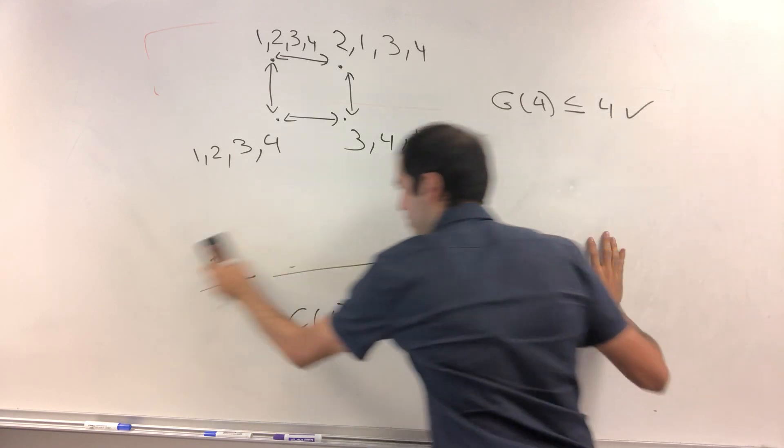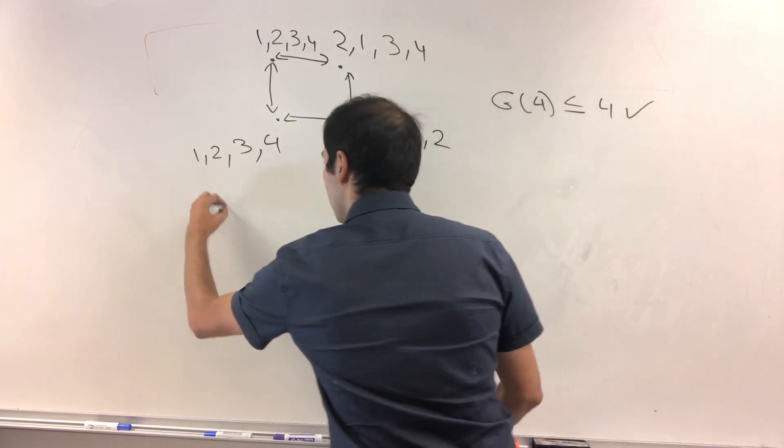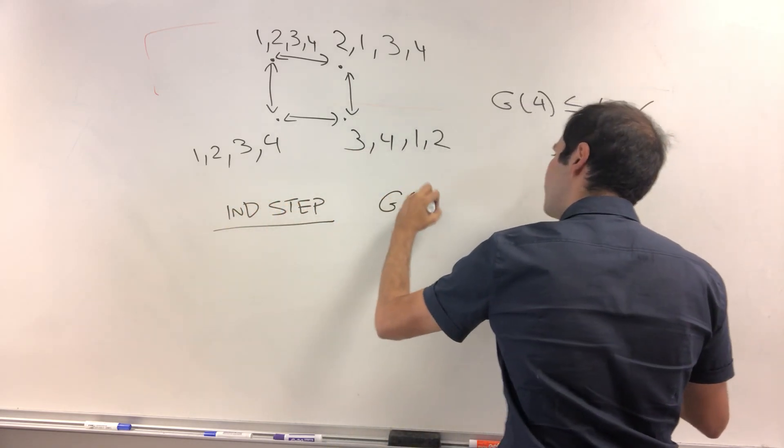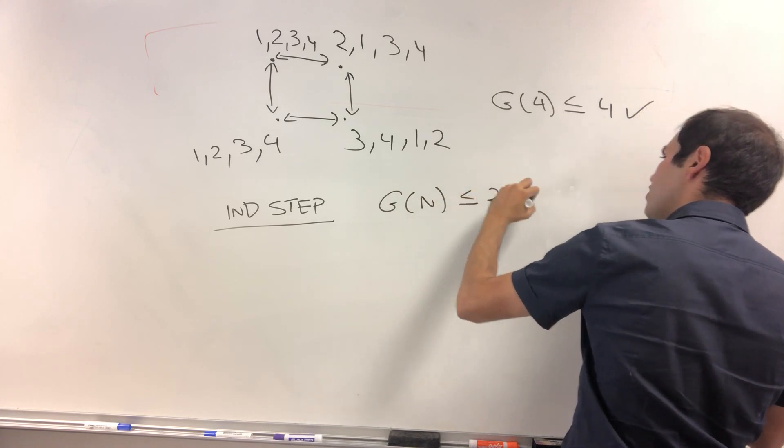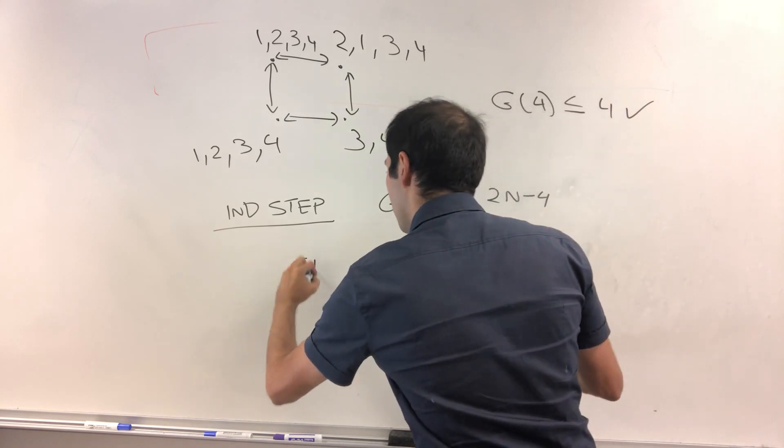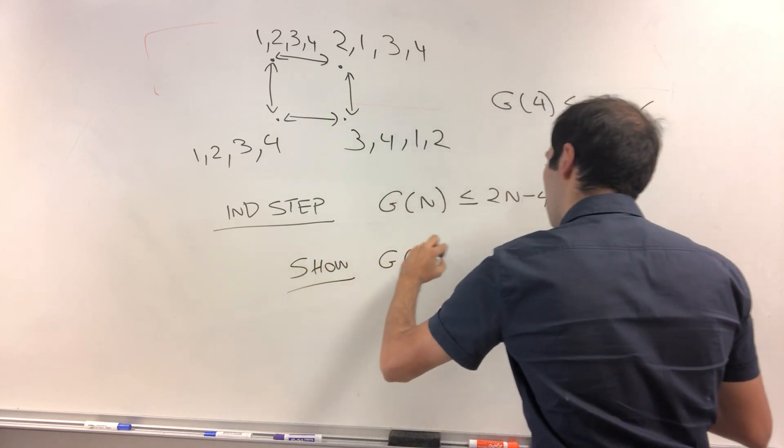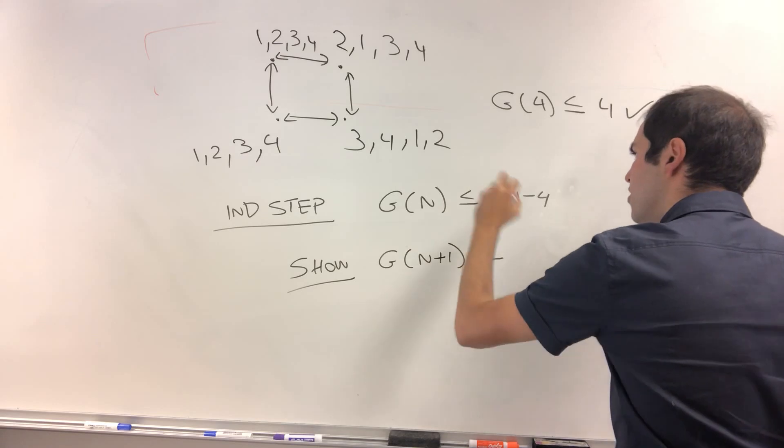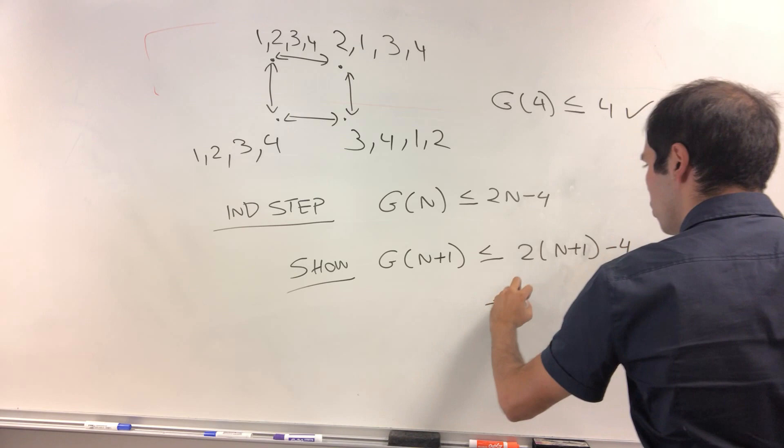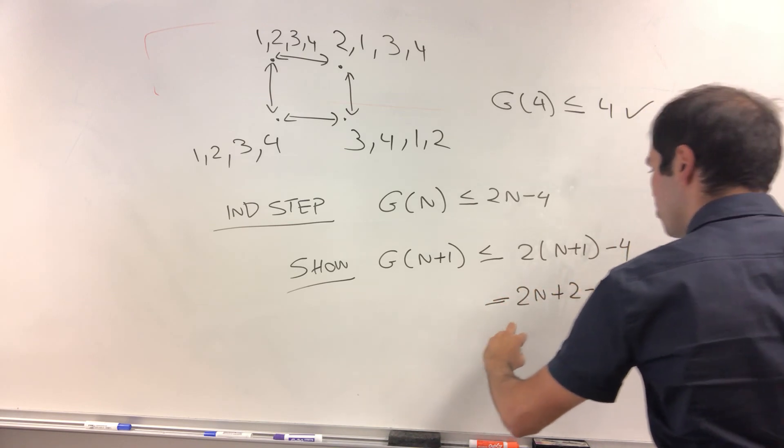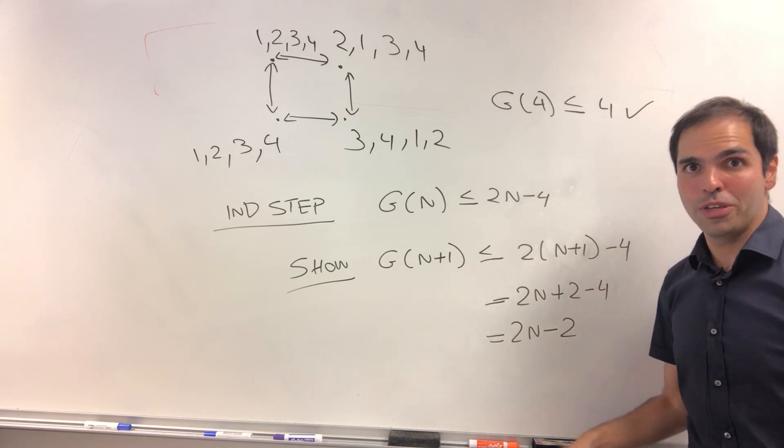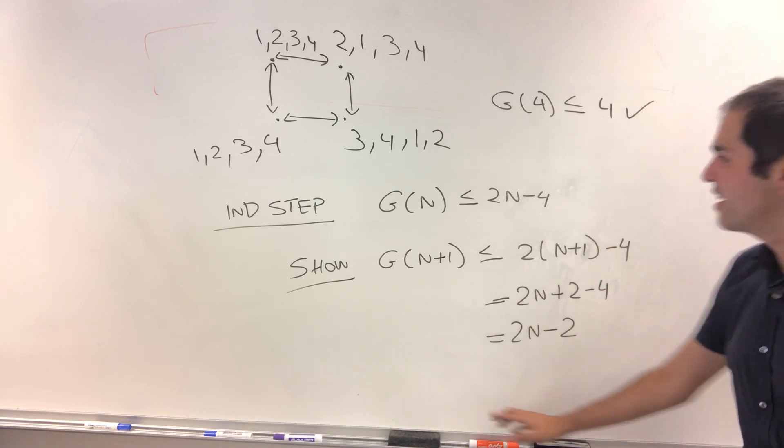Suppose it takes at most two n minus four calls. For n people, what we want to show is that it takes at most two times n plus one minus four calls. So two n plus two minus four, so two n minus two calls for n plus one people. And let's see how we can do that.